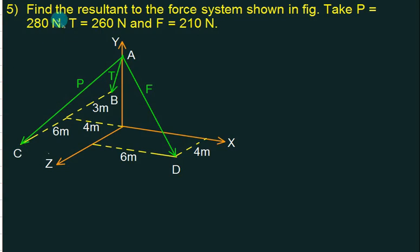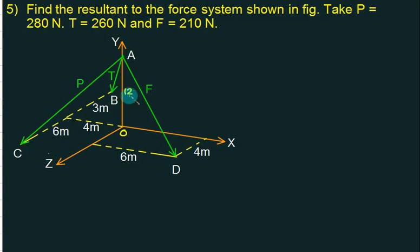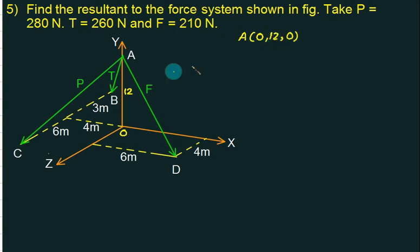We are given a system and want to find the resultant. The figure is provided but coordinates are not given, so we first identify them. We have three forces: P, T, and F. Point A is lying on the y-axis, so the x and z coordinates are 0, and the y coordinate is 12. So coordinate of A is (0, 12, 0).